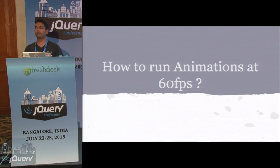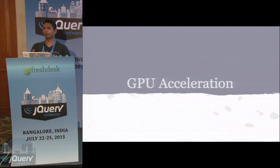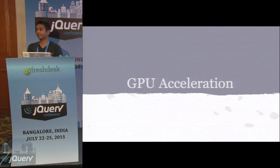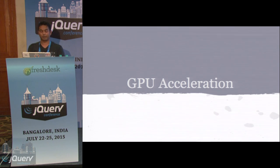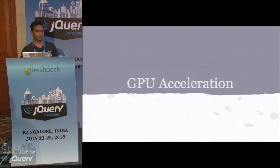How can we run animations at 60 FPS? The first is GPU acceleration. You want to trigger operations via CSS rather than writing them via JavaScript. How many of you are in the practice of changing styles via JavaScript? This is an anti-pattern you should avoid. When you do that via JavaScript, it goes to the CPU, which uploads those operations to the GPU, during which rasterization kicks in and adds to the time needed to render that screen.